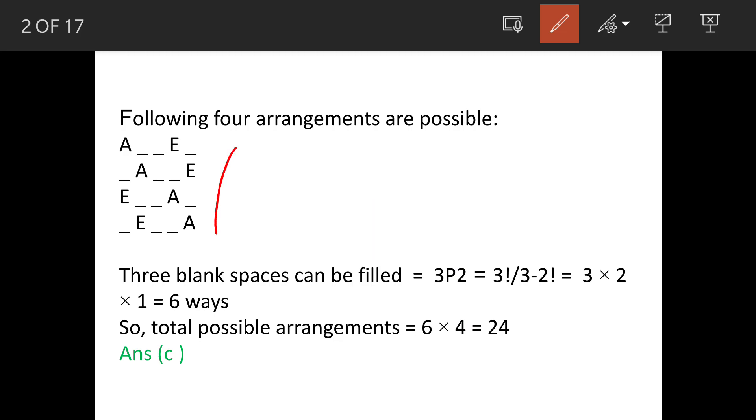So four ways into 3P2. So that means factorial 3 upon factorial 3 minus 2, because out of three letters available, two are to put between A and E in different combinations, different permutations. So this becomes, when you solve this, it becomes 3 into 2 is equal to 6 ways.